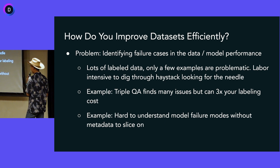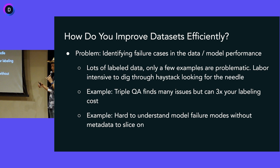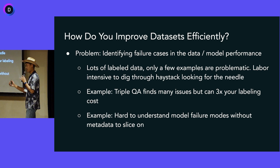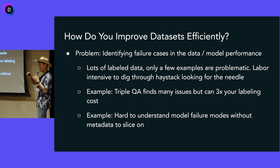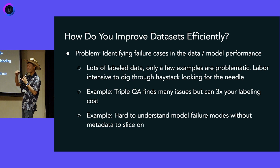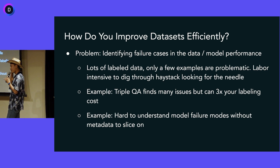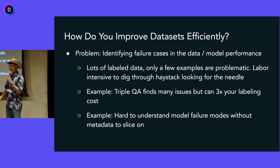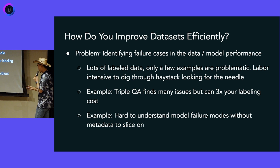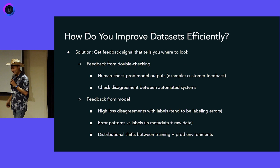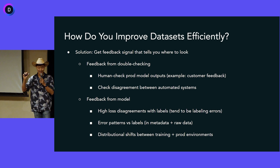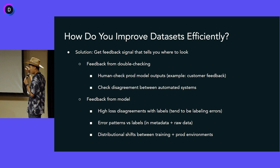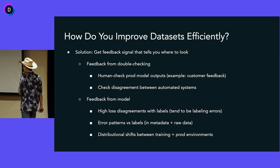Another example: how do you understand what types of things your model struggles on so you can collect more data? There's a famous story of Andrej Karpathy spending two to three hours every day just looking through every single example in his dataset one by one, building a mental clustering of what the failure cases are. But that doesn't scale — it's also kind of a waste of talent. You want to find those needles in the haystack more efficiently, searching through your large dataset to get them quickly.